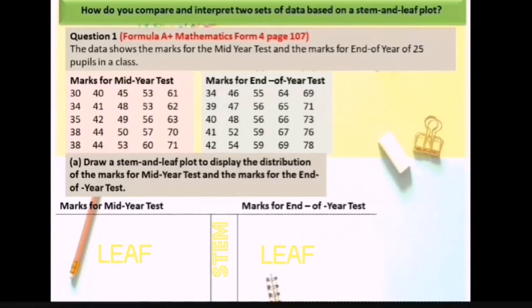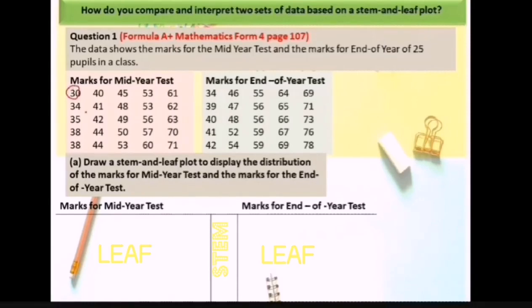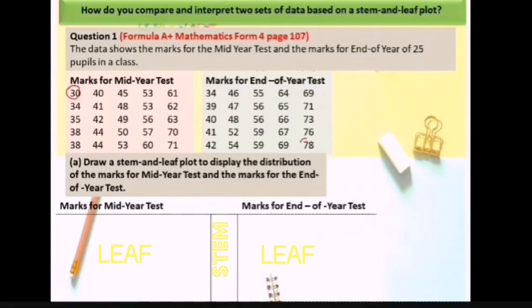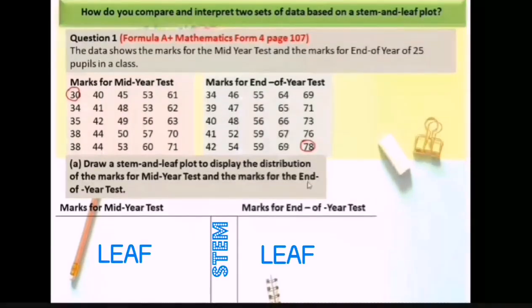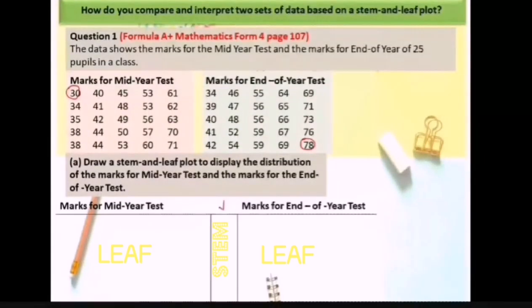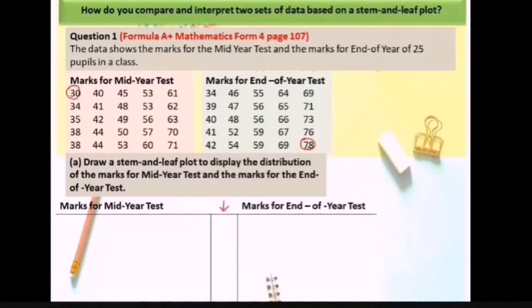If you look at the data, the lowest mark is 30 and the highest mark is in the 70s. This means the stem column starts with number 3 and goes up to number 7.